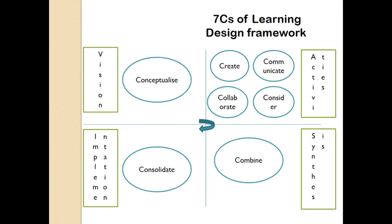We come to the Seven Cs of Learning Design framework, which has been broken down into four breakout parts as we can see. We have the vision, the activities, the synthesis, and the implementation, which carries each of the Cs at one point or the other.